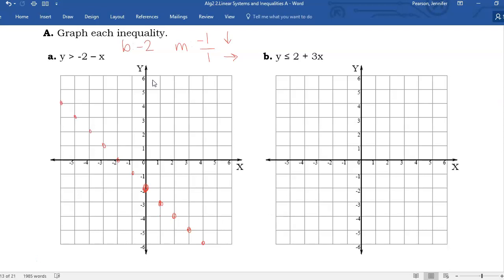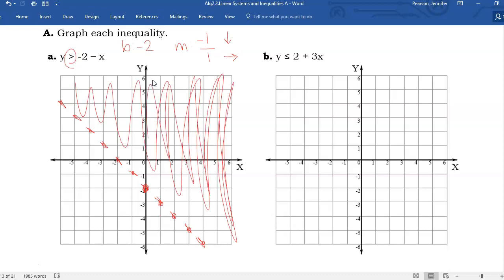Now, based on the fact that this is a greater than symbol, I know that I will use a dashed line instead of a solid line. So I do not want to connect these dots. And because it is a greater than symbol, I know that I will shade above the line. So that is all this noise up here.